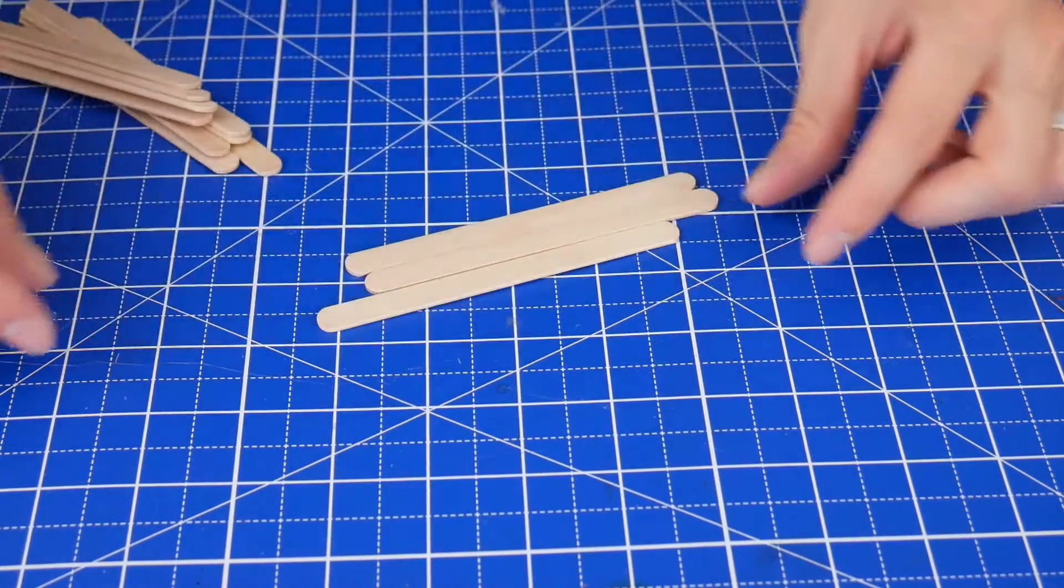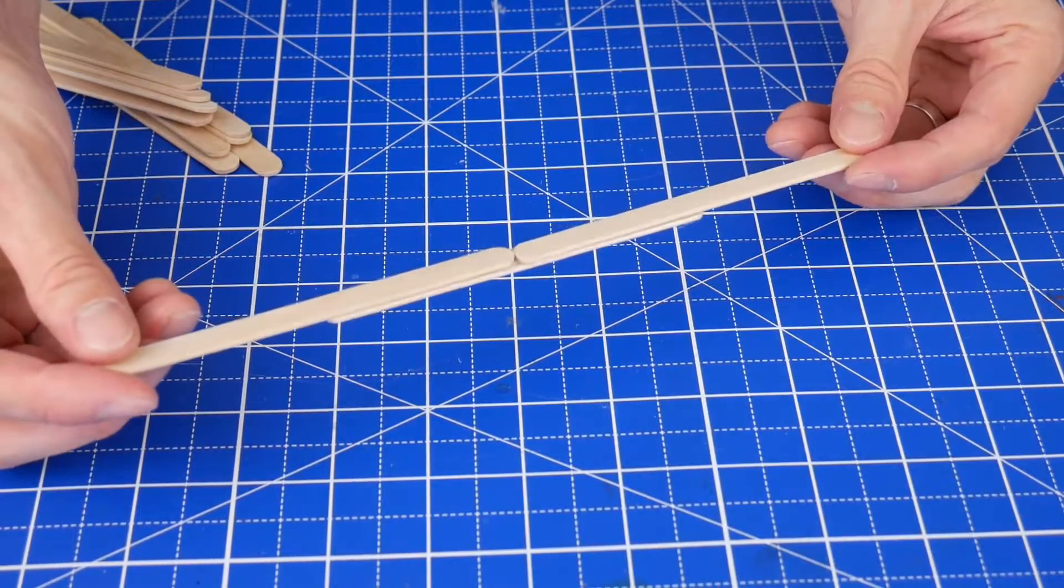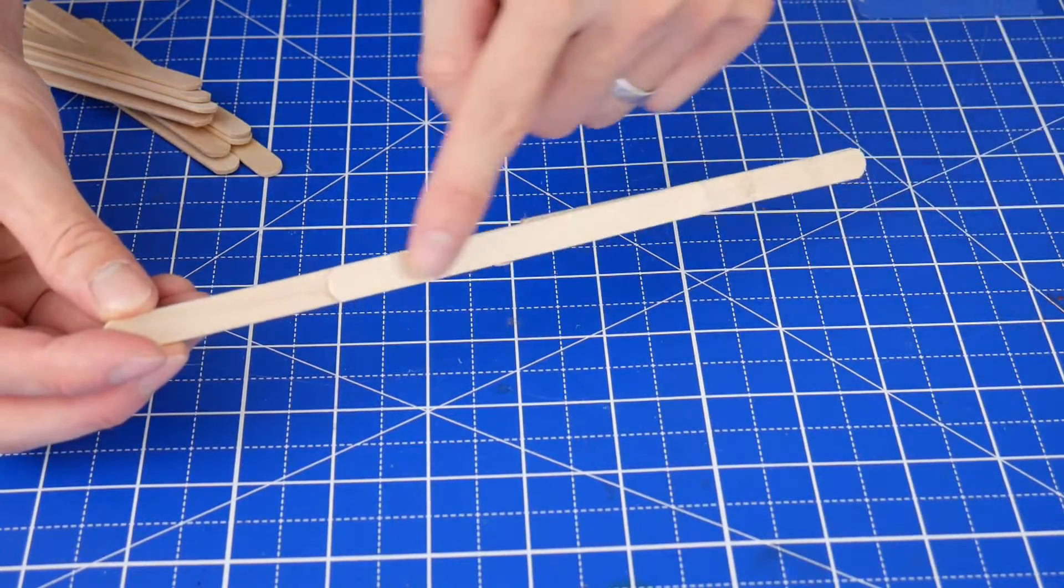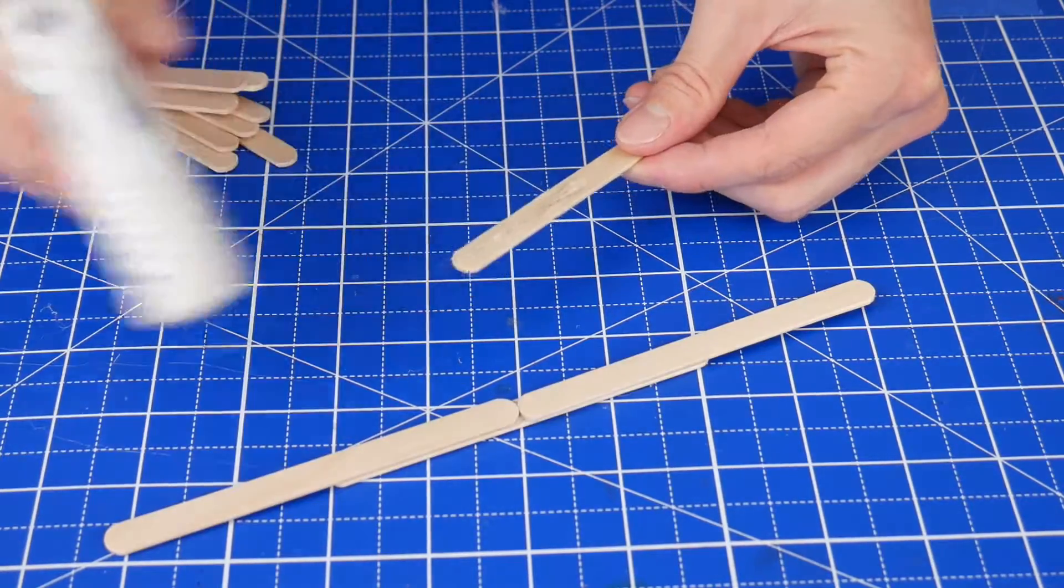Okay, now we need to build the catapult arm. Create a beam that's two craft sticks long and connect it in the middle with a third craft stick. Repeat one more time.